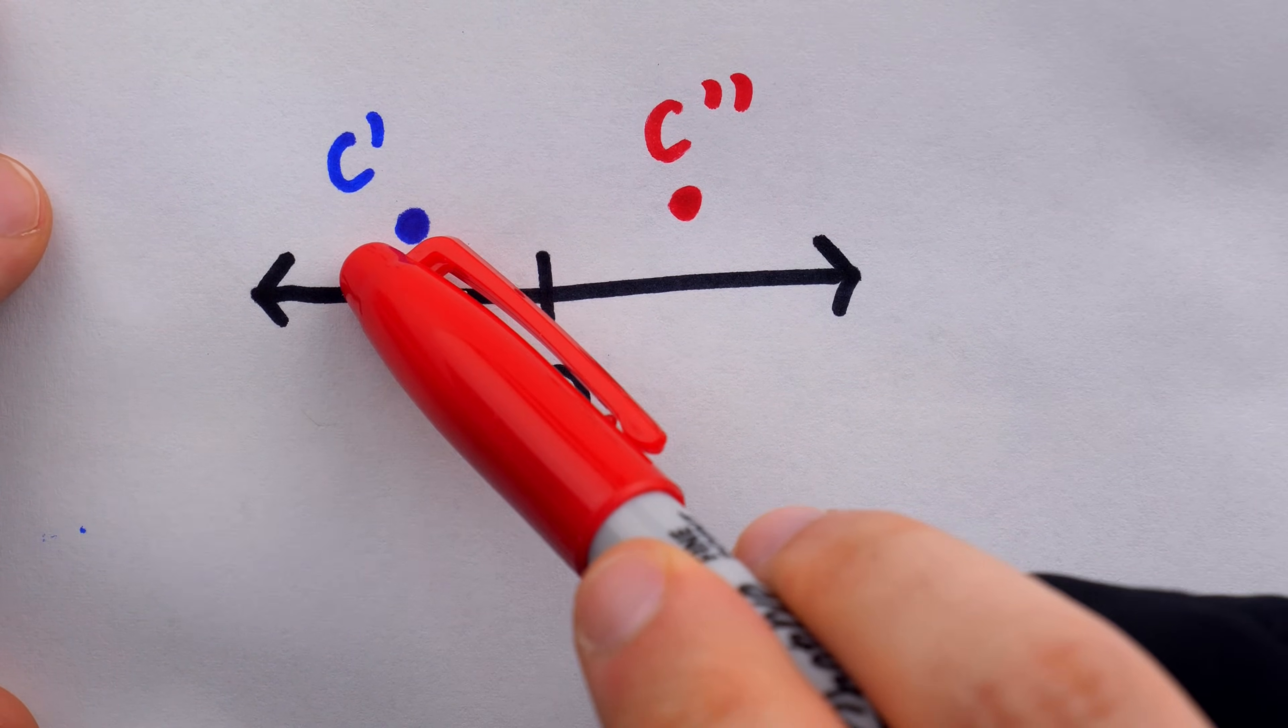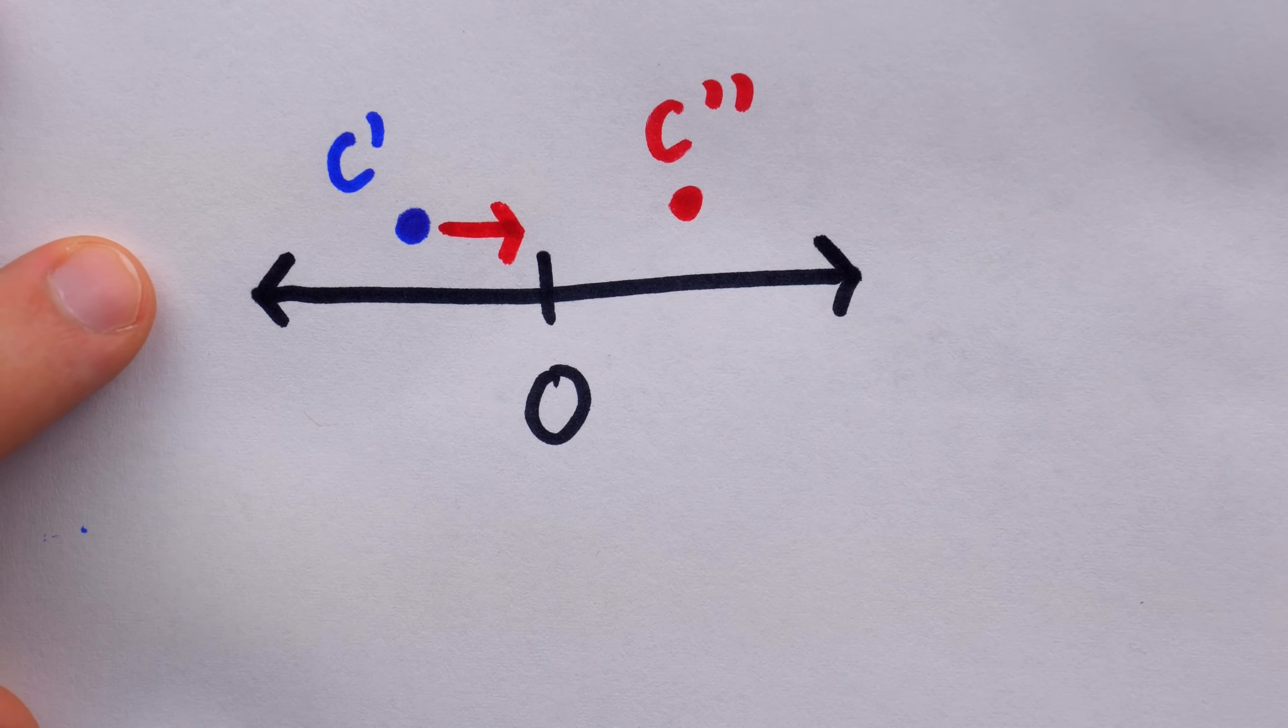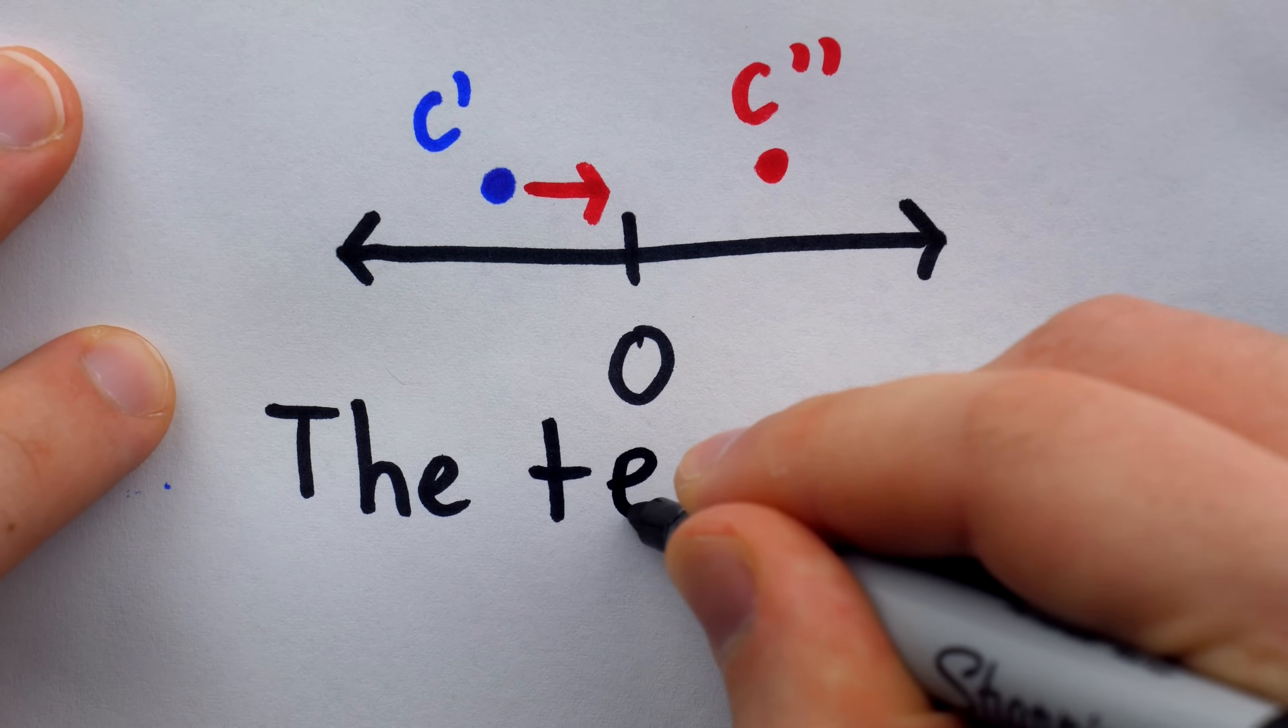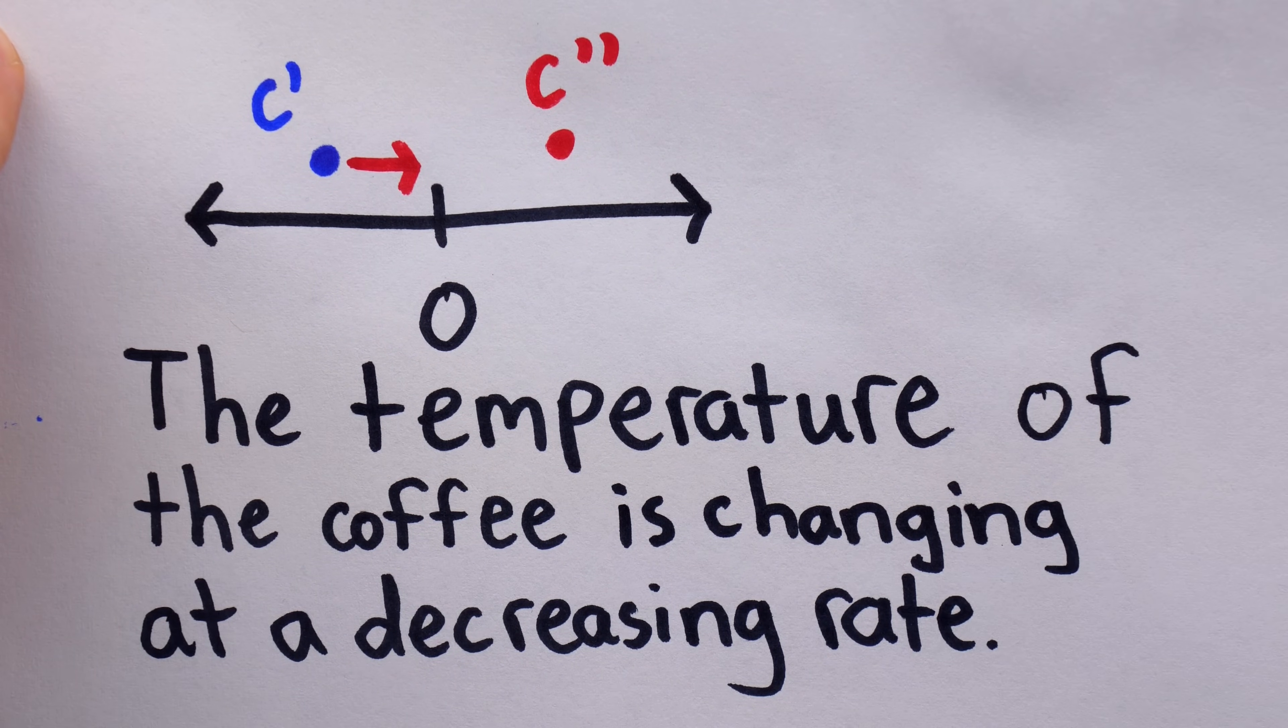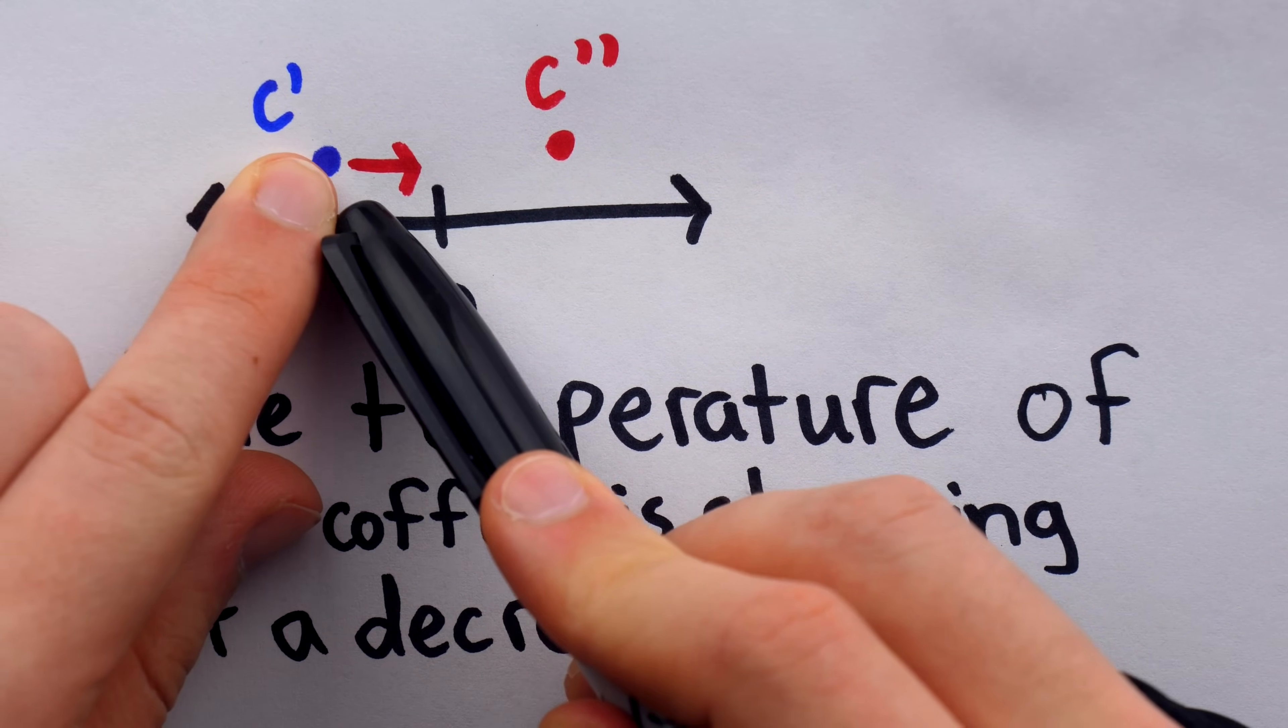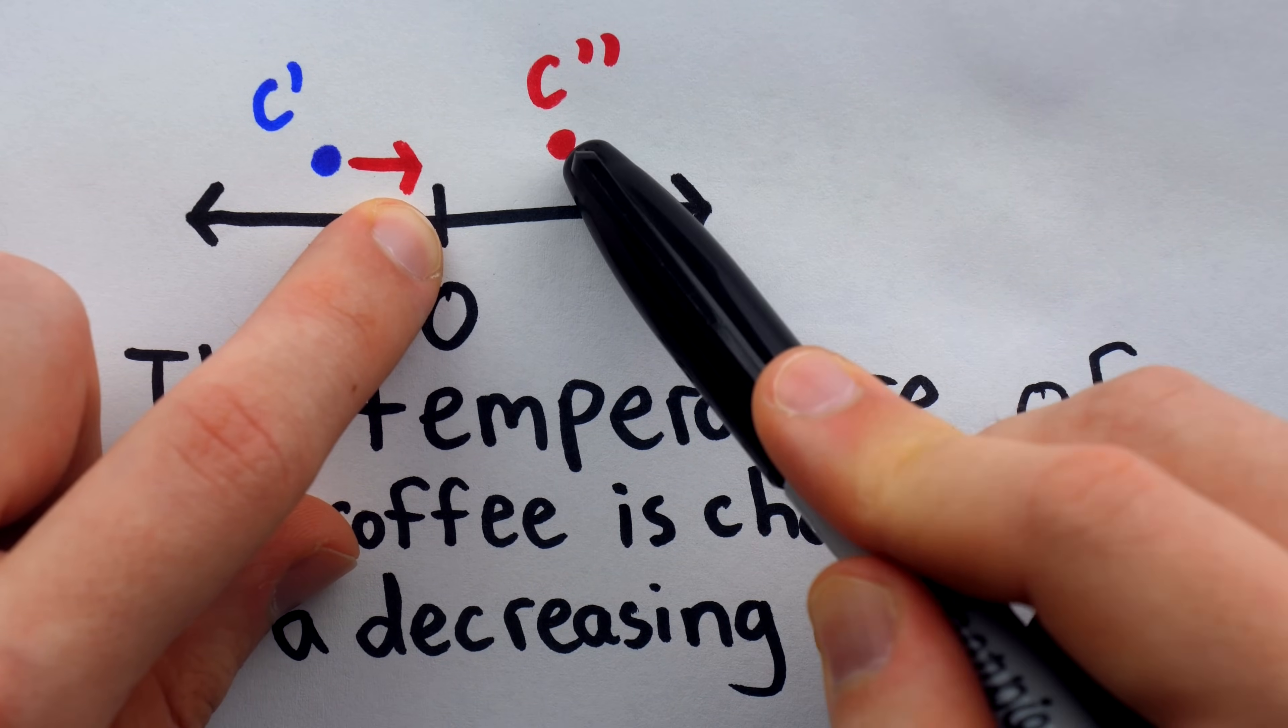And the second derivative describes how the first derivative is changing. This means that even though the first derivative is negative, the second derivative is pulling it towards zero, because the second derivative is positive. And thus, many students reasoned that the temperature of the coffee is changing at a decreasing rate. And that's because this C prime that describes the rate of change of the temperature of the coffee, those changes are getting smaller because C prime is getting closer to zero. It's being pulled in that direction because C double prime is positive.